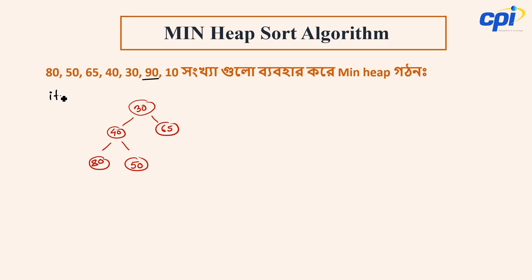Now we insert item 90. We place 90 on the left side of 65. Since 90 is larger than its previous root/parent, we check and compare — since it is larger, no interchange happens.